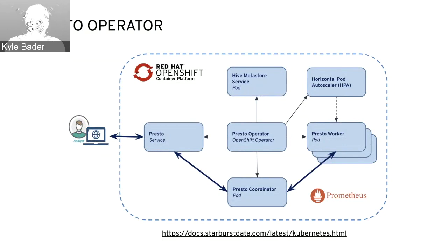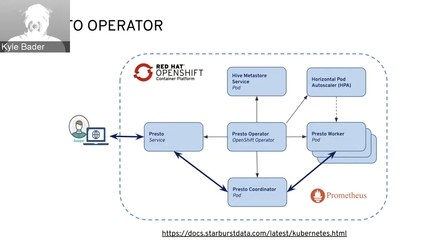A Presto cluster is composed of a number of parts. You'll have the coordinator, which receives queries, plans them out, and distributes tasks to workers. Those workers source the data from the variety of different data sources and do any shuffling and filtering necessary for the query. There's also an autoscaling component — if the query load is high, additional Presto pods can be automatically provisioned. And finally there's the metastore service, which in data lake use cases gives you a separate place to store the schema for your particular tables.